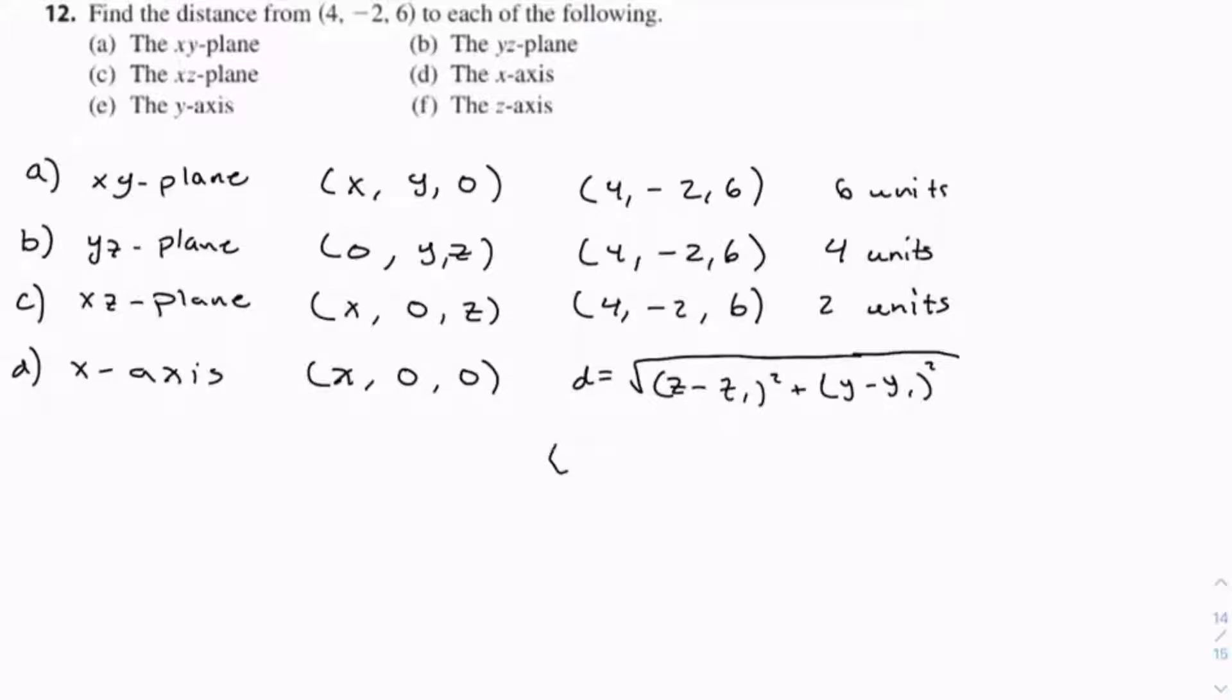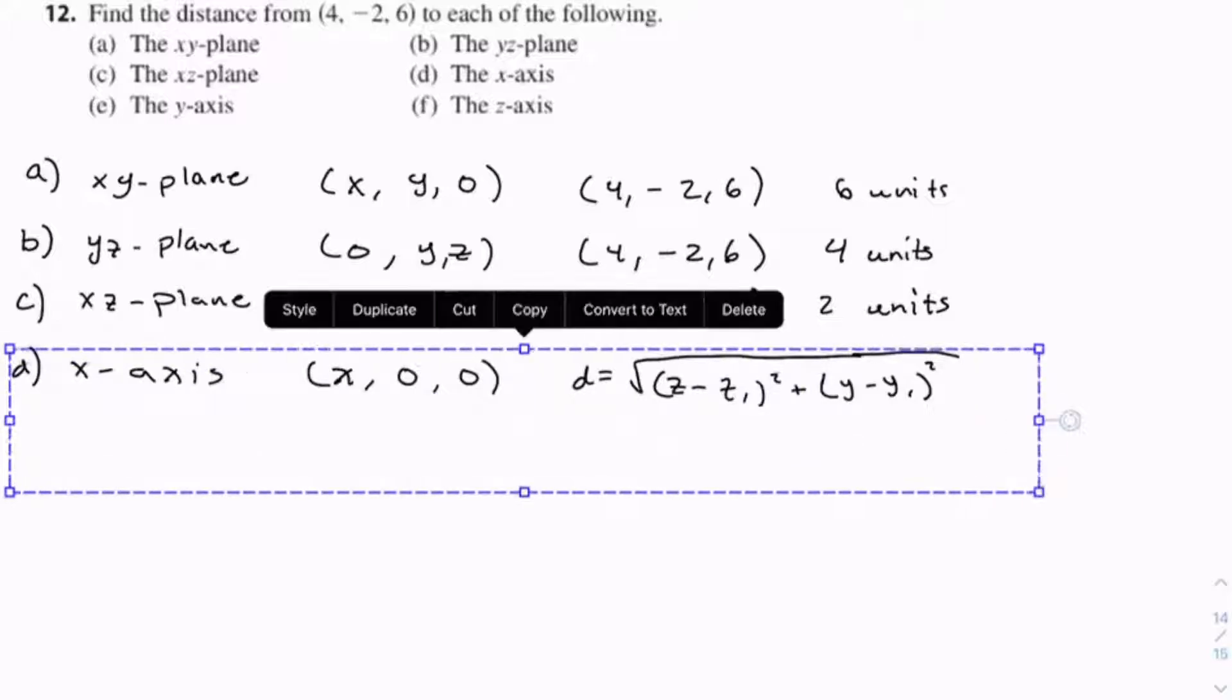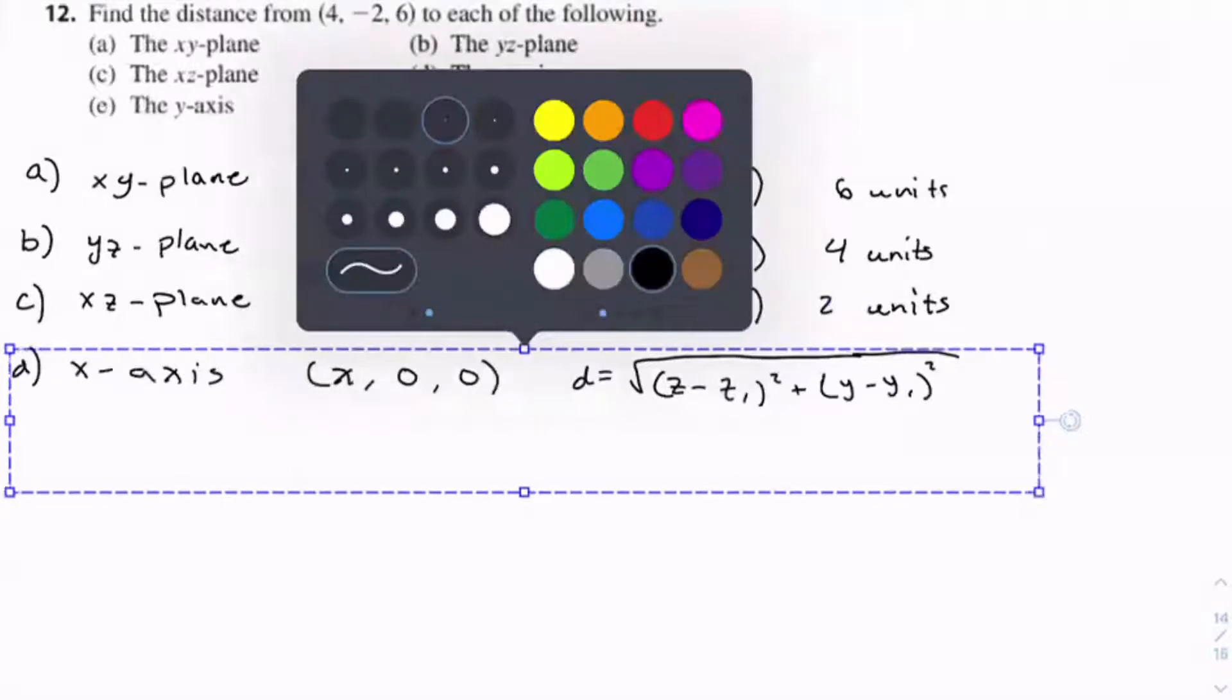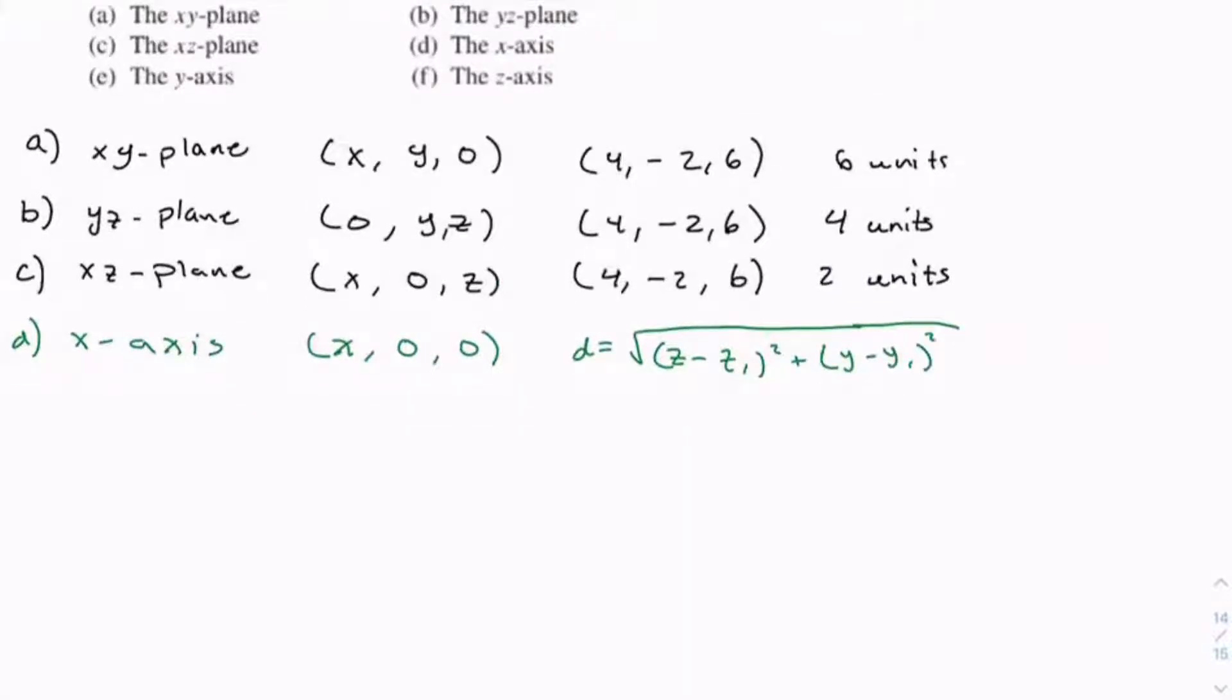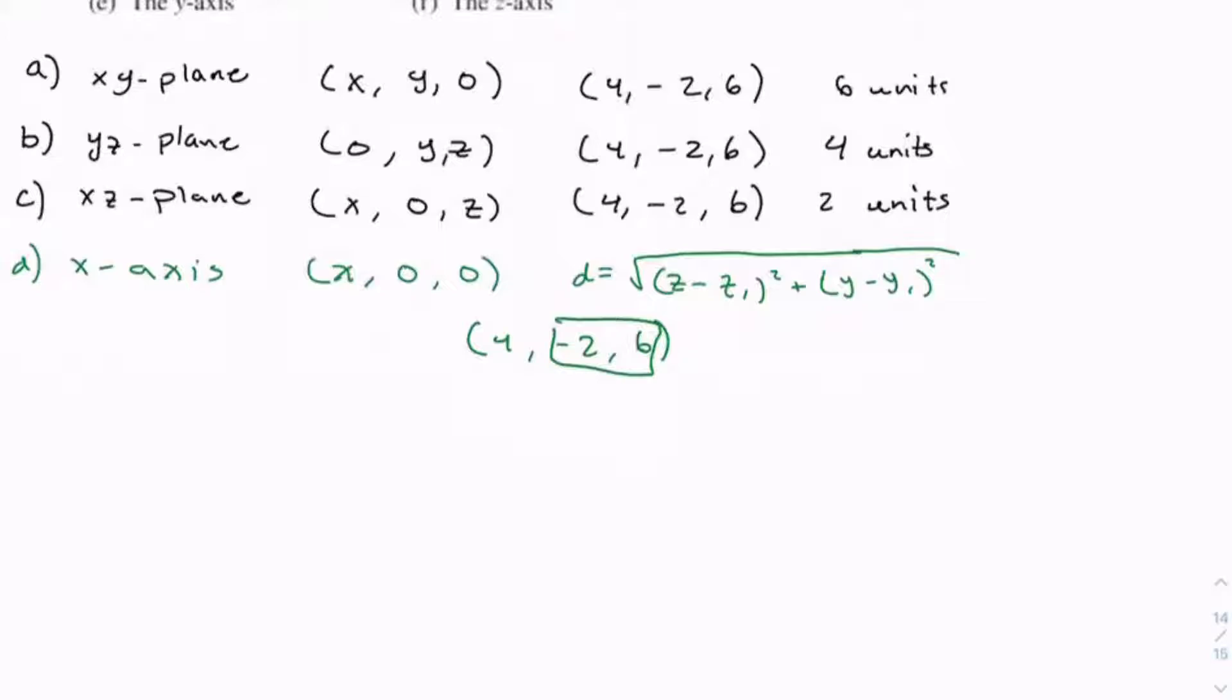Because x can be anything, we're just looking at the -2 and 6 at this point. So we're just looking at these two, and we're comparing it to (0, 0).